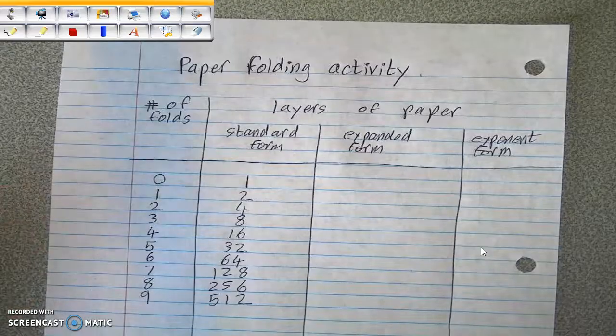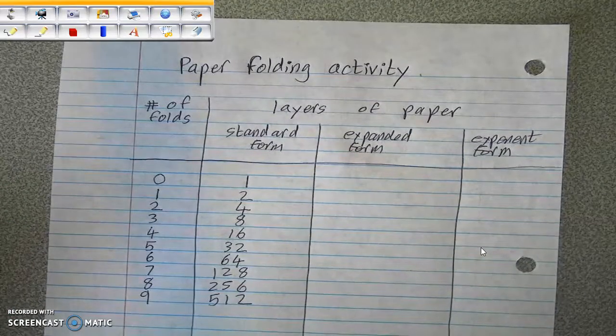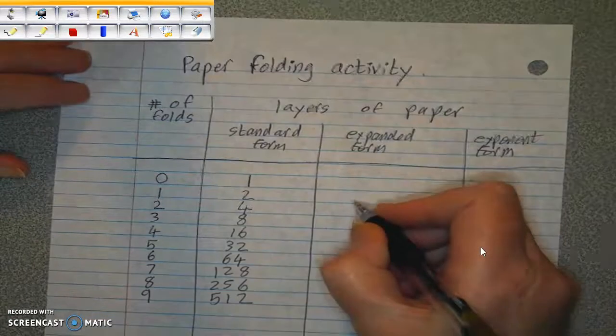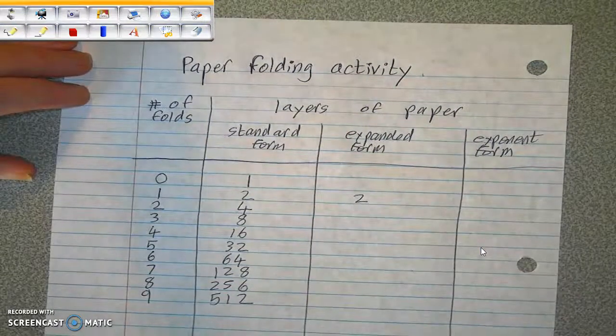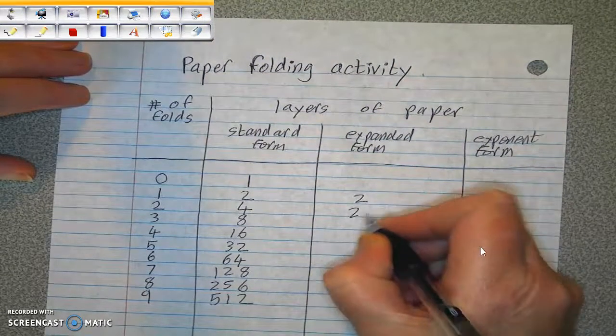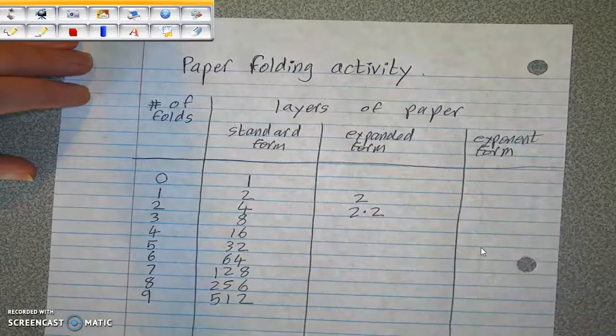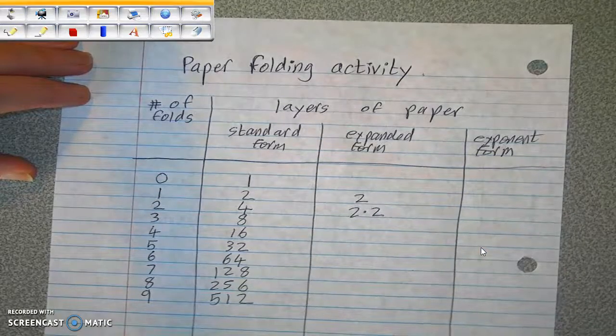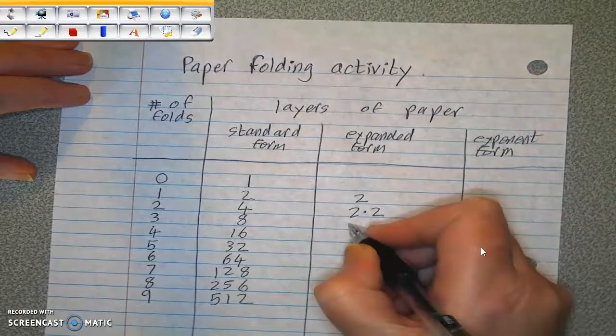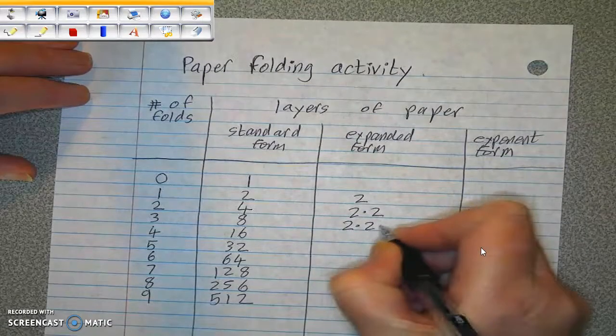I want to show you these numbers in expanded form. This is the number 2. This is 2 times 2, which is 4, as you know. 8 is 2 times 2 times 2.